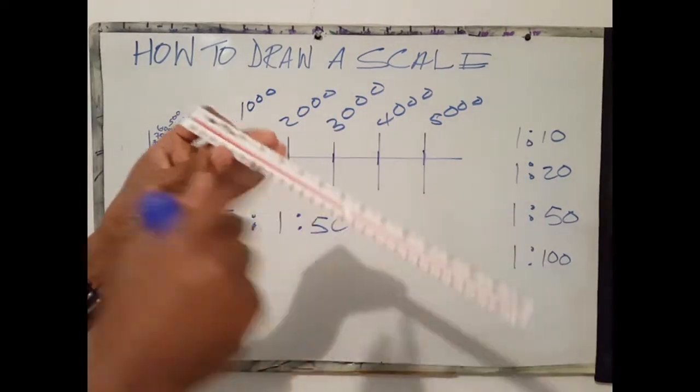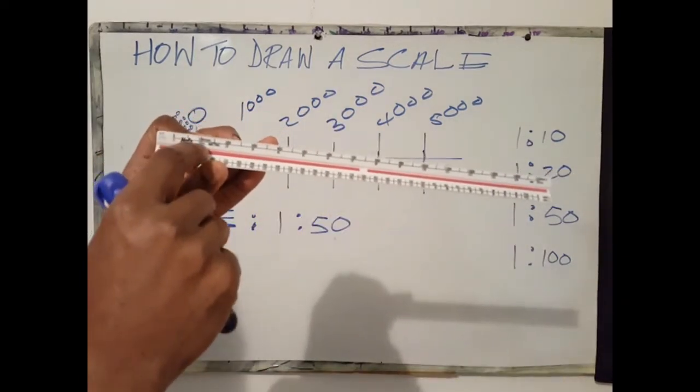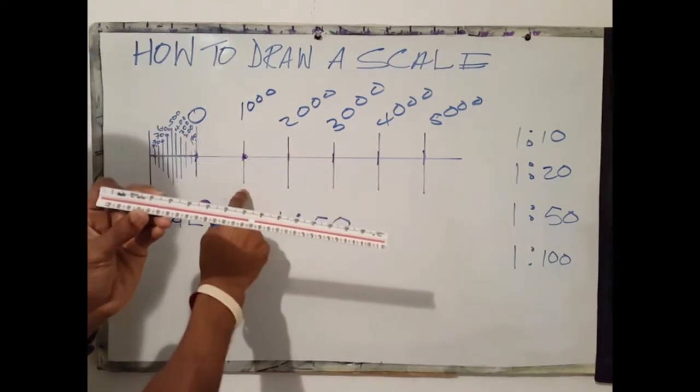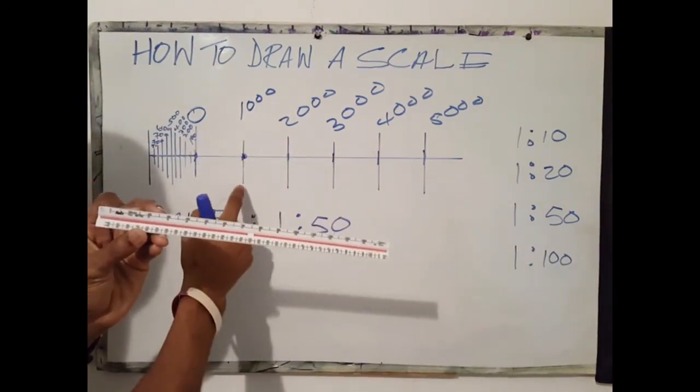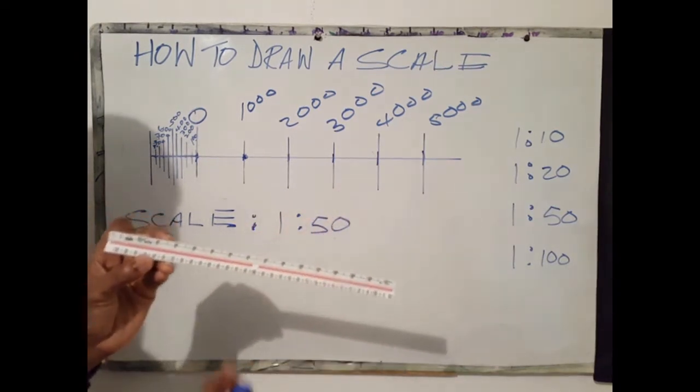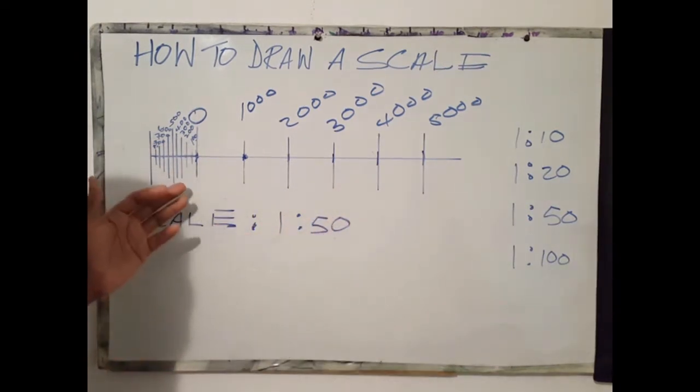On a regular scale rule, the major increments are in units of 1000, so from here to here is 1000, then another 1000, but we know that we need smaller units like 150.